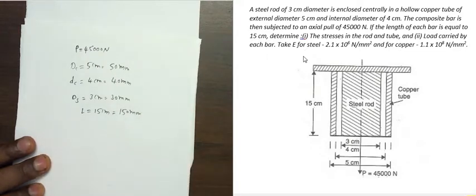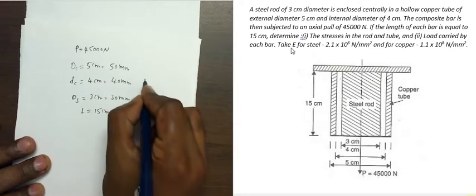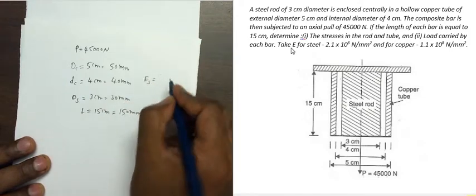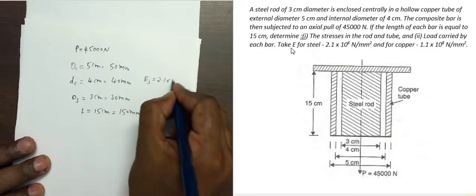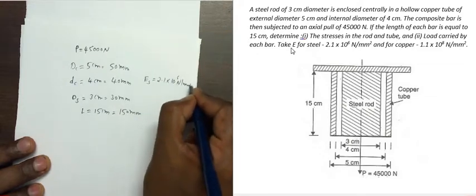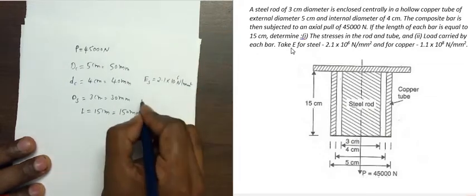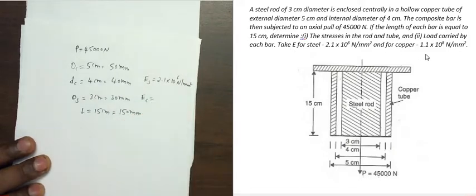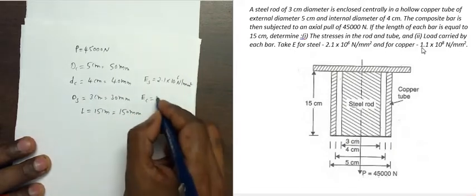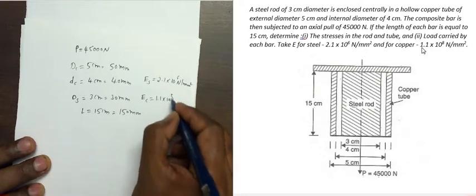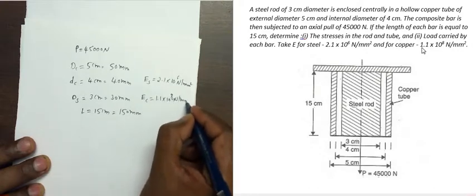E for steel — E means Young's modulus — E of steel is equal to 2.1×10⁶ N/mm². Similarly, E for copper, that is Young's modulus of copper, is 1.1×10⁸ N/mm².